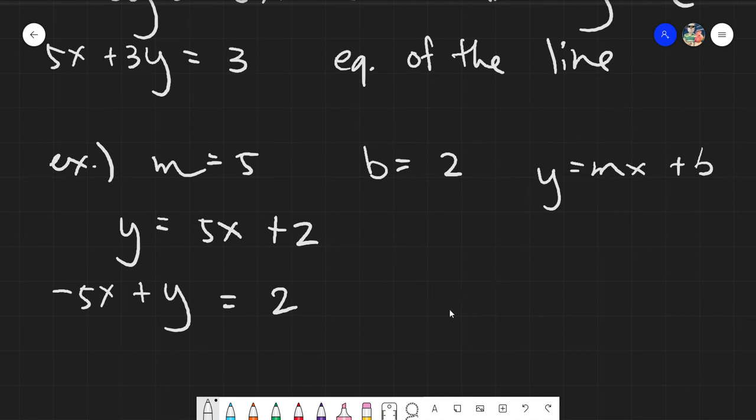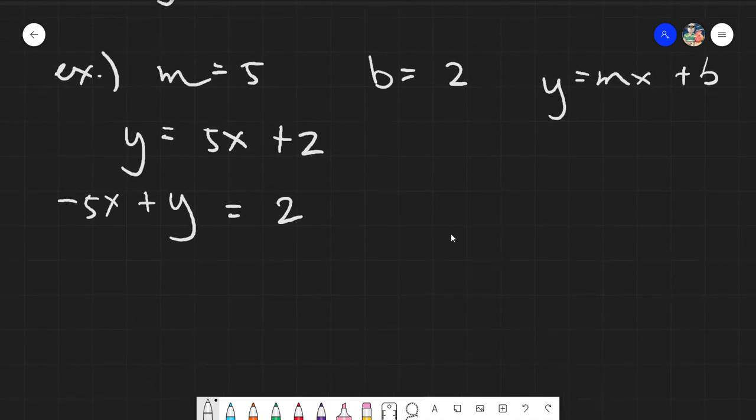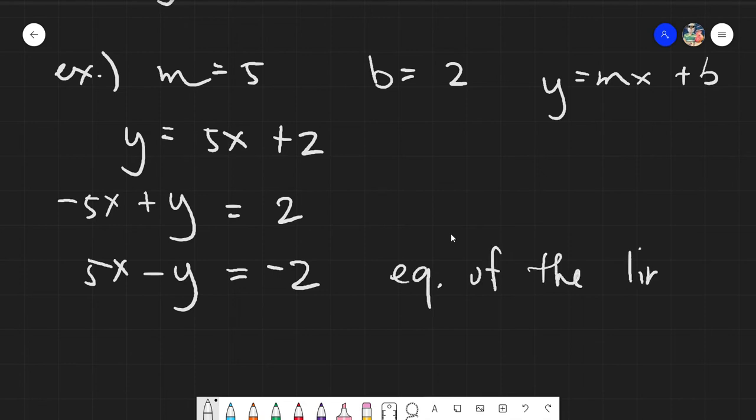And again, for cosmetics only, I would prefer your x to be positive. Therefore, if you change the value of x, I mean the sign, if you change the sign of x, then everything else will change as well. So this is -y and this would be -2, giving you 5x - y = -2, your equation of the line.